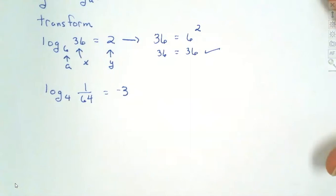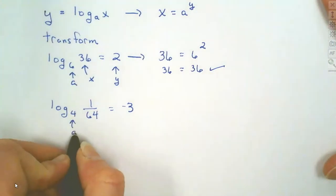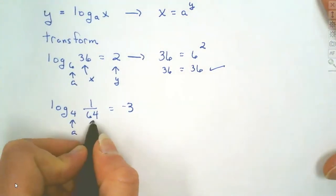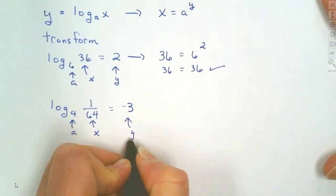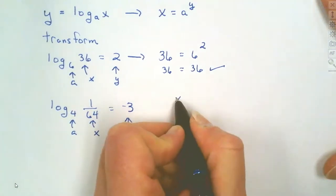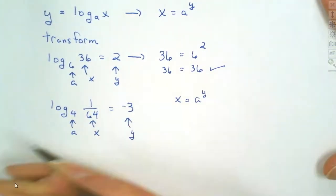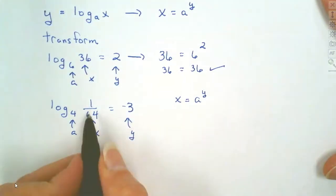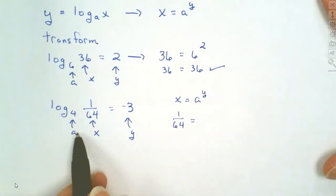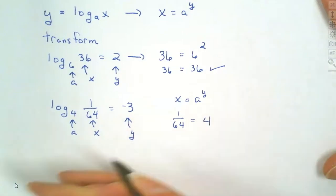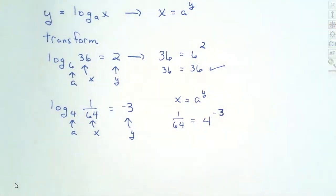Now we're going to transform it using our formula. The number inside the logarithm is the x, and the number on the end is the y. We're going to transform this into x equals a to the y power. We know x is 1 over 64, our a value is 4, and our y value is negative 3.